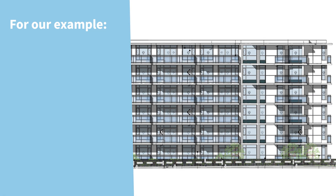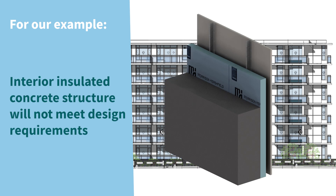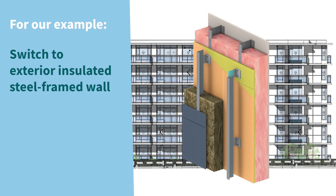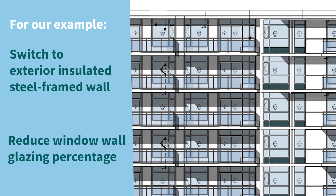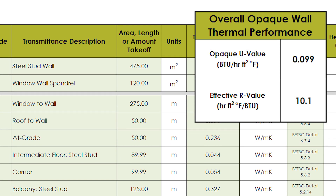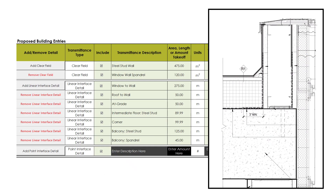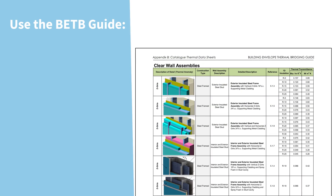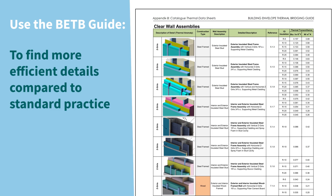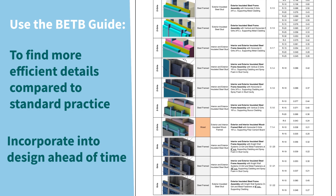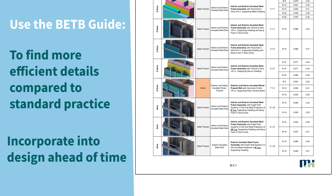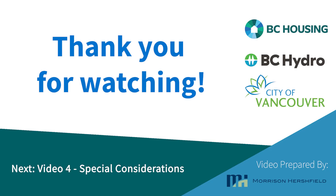For our example, we determined that to reach R10 for the opaque envelope, the current design is not sufficient, and we have to switch to an exterior insulated steel frame wall assembly and reduce the amount of window wall while still meeting all the project requirements. From there, it's straightforward to update the values once the details are further developed. When the design is finalized, we can further refine thermal transmittances that match the final design. Or, during the process, we can use the details in the BETB guide to better inform the design so that efficient details are more likely to be considered and incorporated into the design. Thank you for watching. Up next is video 4, Special Considerations.